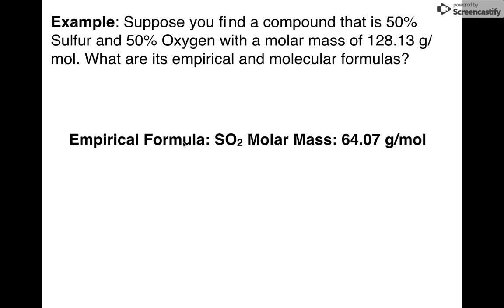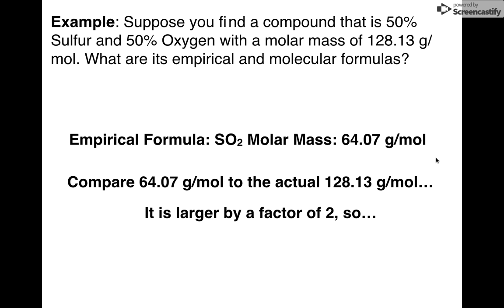Now, what is my molecular formula? Notice it gives me the molar mass. It says it's supposed to be 128.13. Well, what is the molar mass of our empirical formula? If you add this up, S and 2 O's is 64. I have to compare 64 and 128. What is going to be the number I need to multiply this by to get to 128, which is the number that was given to me? Answer, I have to multiply by 2. 64.07 times 2 is about 128.13.